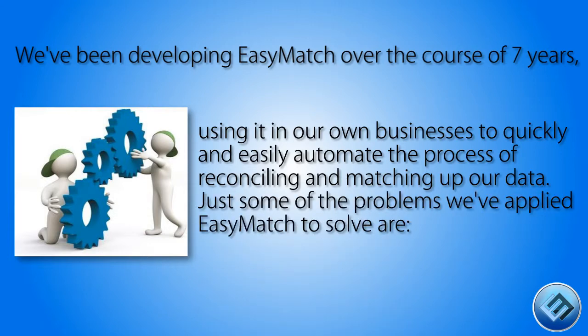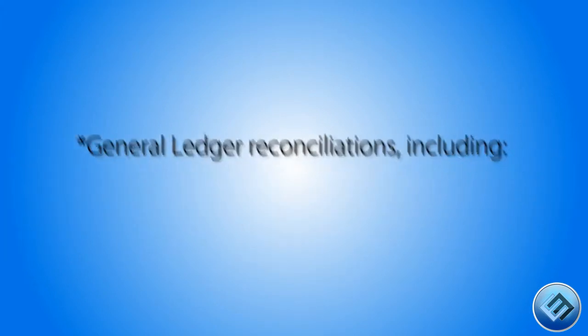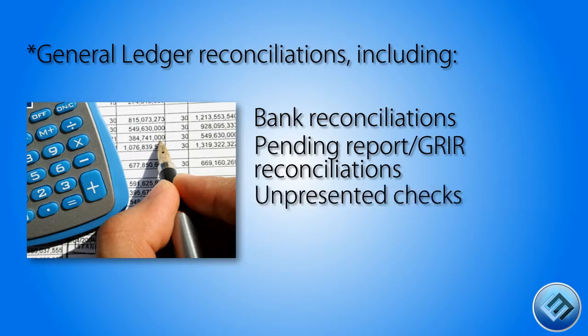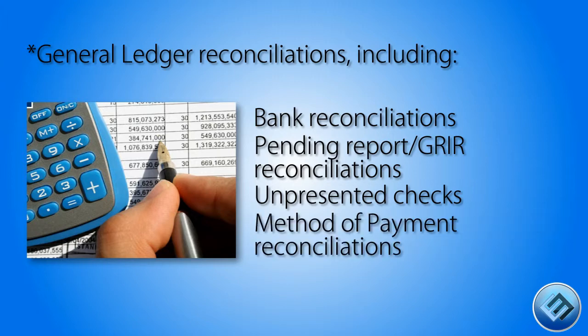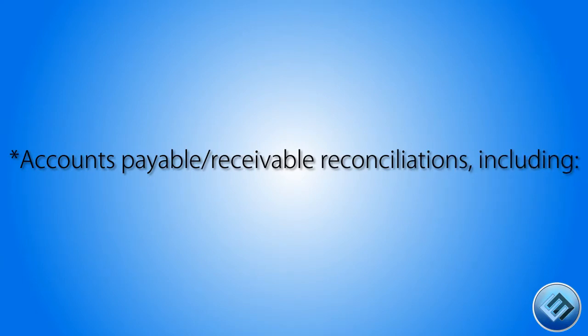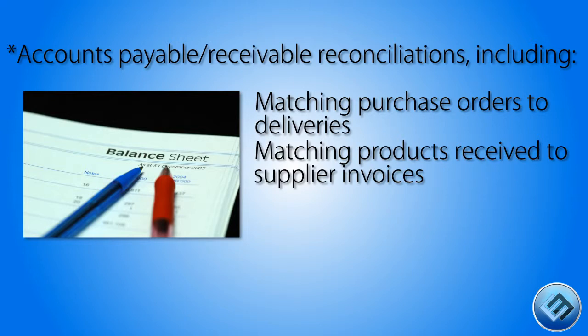Just some of the problems we've applied EasyMatch to solve are: general ledger reconciliations including bank reconciliations, pending report/GRIR reconciliations, unpresented checks, method of payment reconciliations, accounts payable/receivable reconciliations including matching purchase orders to deliveries, and matching products received to supplier invoices.